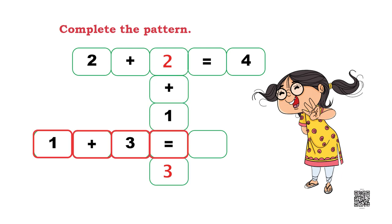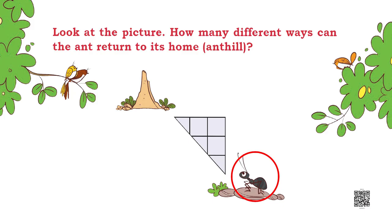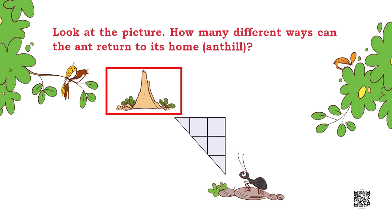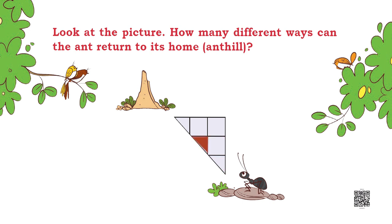Look at the picture. In how many different ways can an ant return to its home? A triangle is given here which is divided into many parts. Now you see which path is easier for the ant.